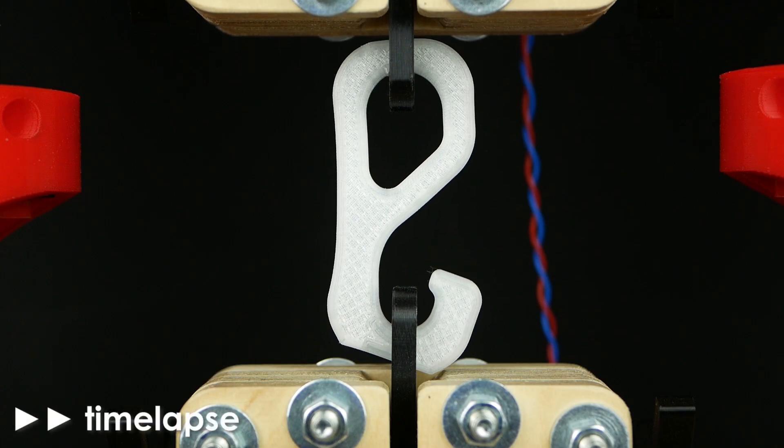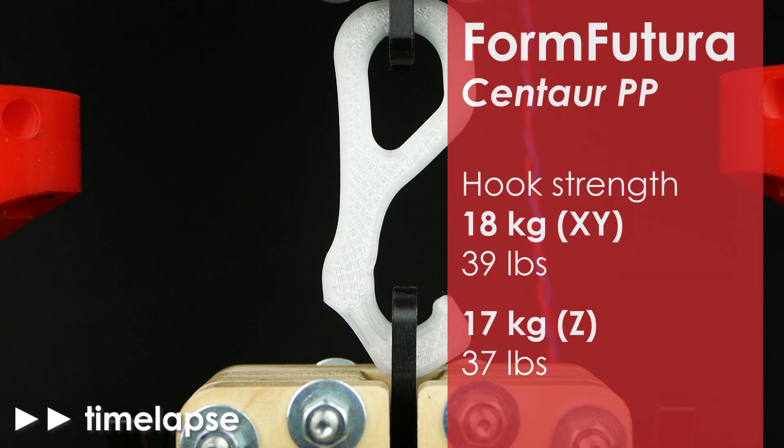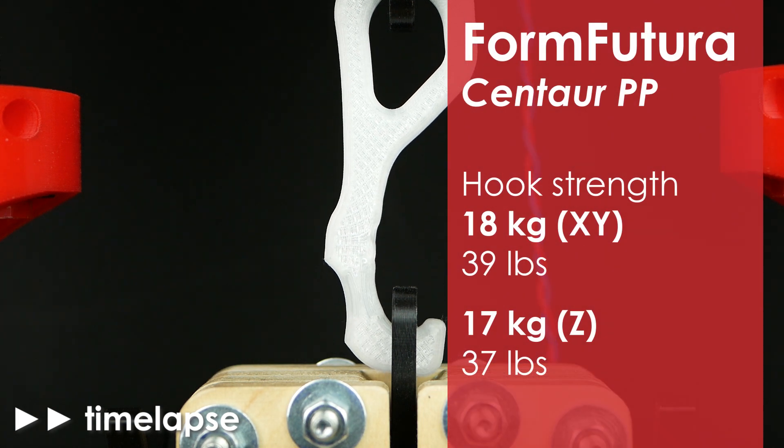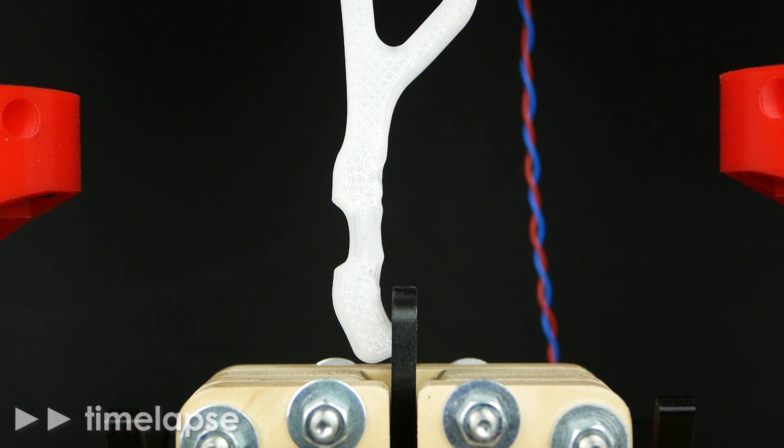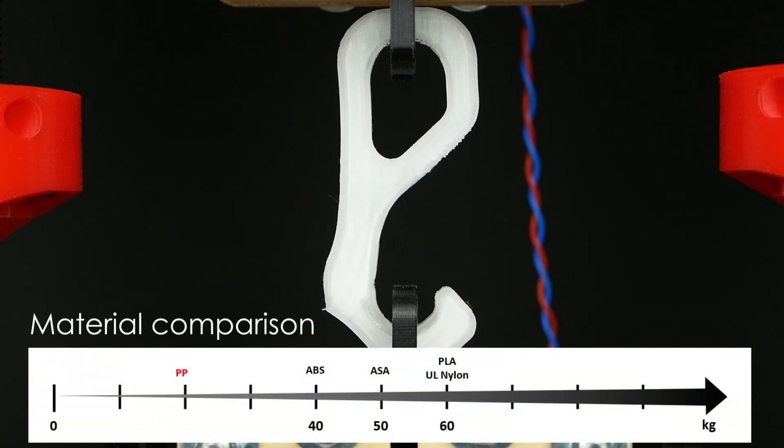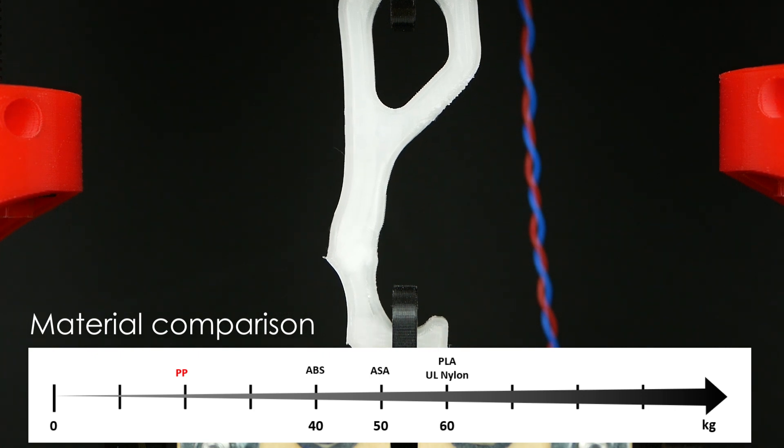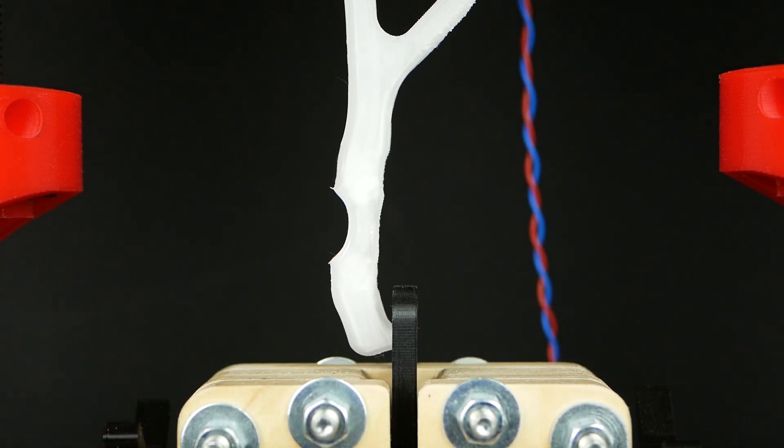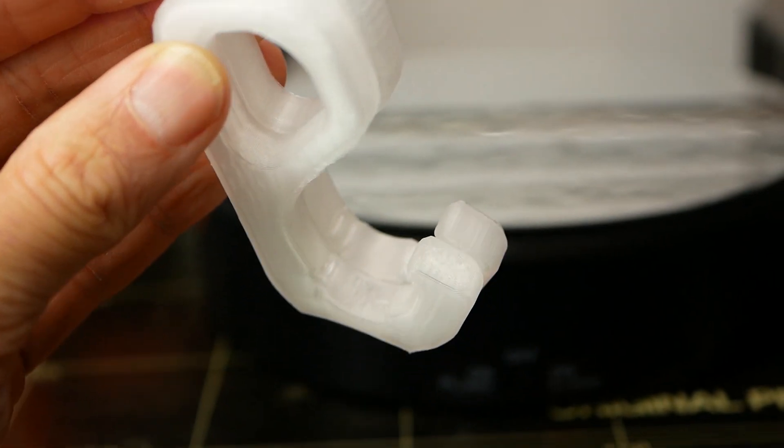The strength of the hook was with 17kg also not impressive, but due to its flexibility it just yields away and didn't even break. Most interestingly, and again a first, was that the hook which was printed standing was able to bear exactly the same amount of load and flexed exactly the same.